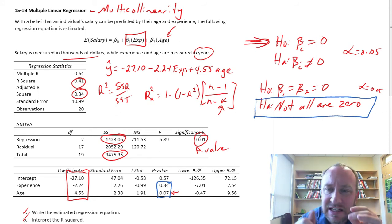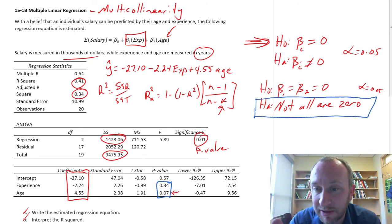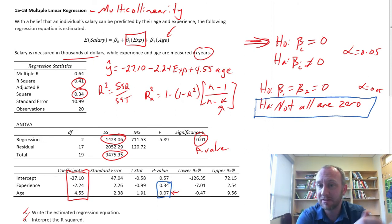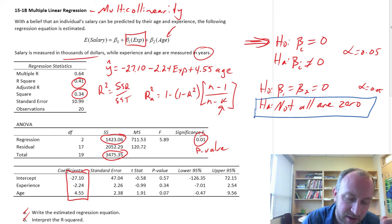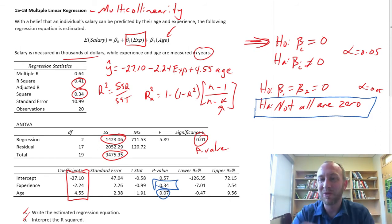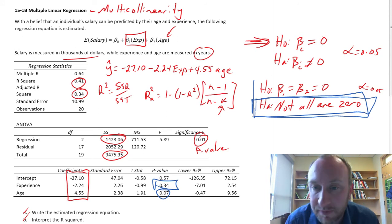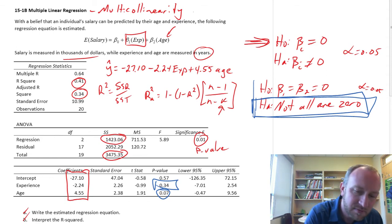Well, it has everything to do with the fact that each of these t-tests, each of these individual parameter tests, is dependent on what the other has already contributed. So as I said before, with experience in the model, age has nothing else to contribute. With age in the model, experience has nothing else to contribute. So with one of them in the model, the other is meaningless. So what this is telling us is that maybe only one of them should be in the model. Because they are statistically significant. They are contributing to the prediction of average salary. But individually, neither one has anything additional to contribute beyond what the other one already has. This is textbook multicollinearity.